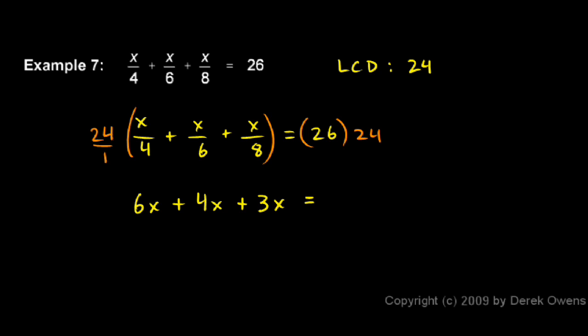And over on the right, I have 26 times 24. I pull out a calculator for that. 26 times 24 comes out to be 624. Now on the left, I have 6x plus 4x plus 3x. These are all x terms, so they can be combined. That's easy. 6 plus 4 is 10 plus 3 is 13. So I have 13x equals 624.